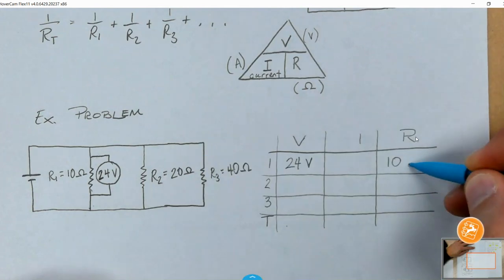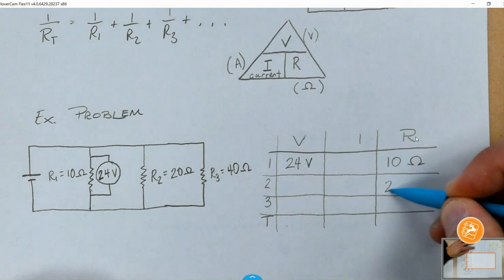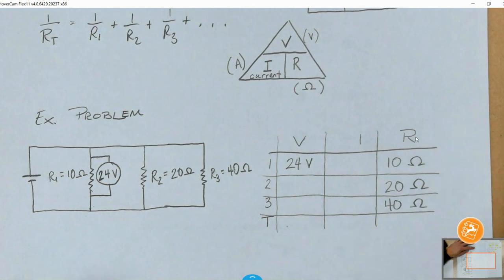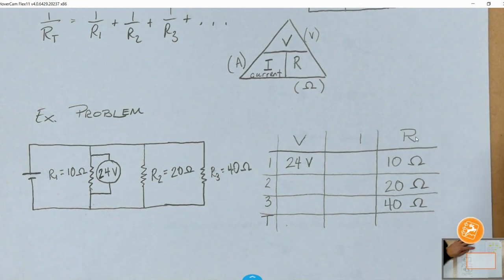R1, we're given 10 ohms. R2, we're given 20 ohms. And R3, we're given 40. No. No. It's not 70, bud.